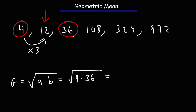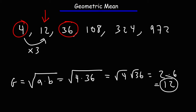Let's break it down and use some math. This is the same as the square root of 4 times the square root of 36. The square root of 4 is 2, and the square root of 36 is 6, and this gives us 12, which is the number right in the middle.